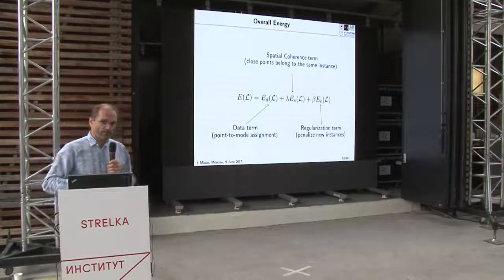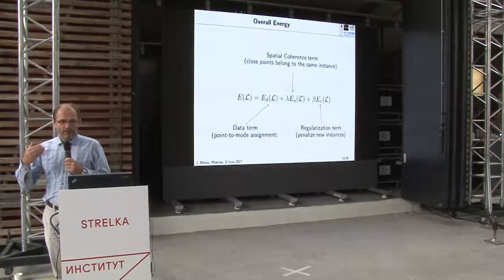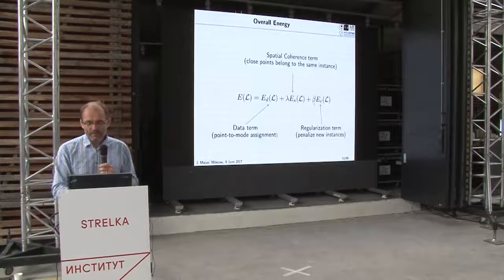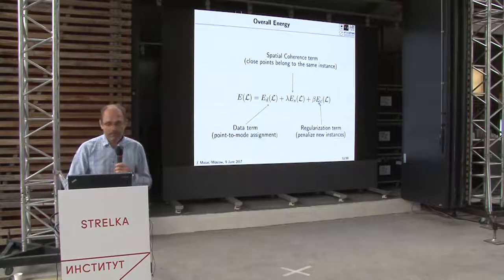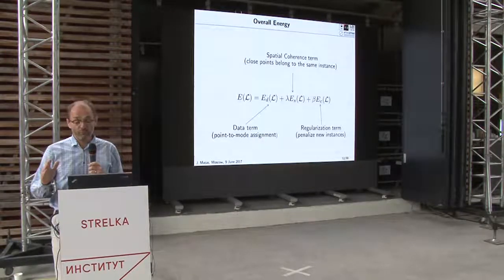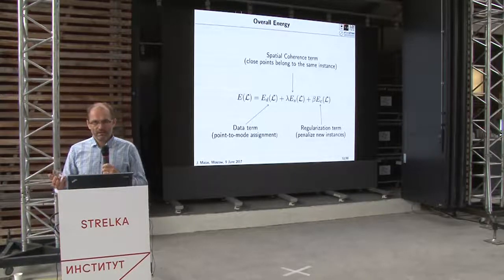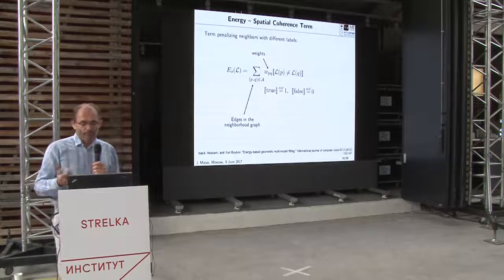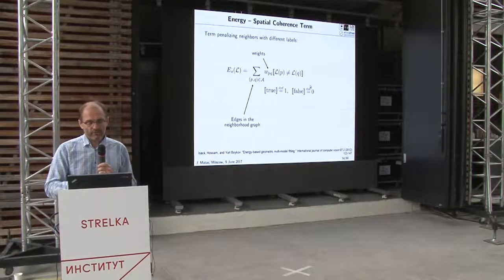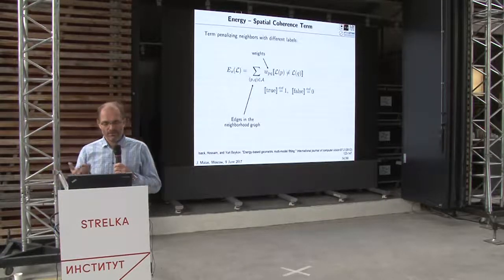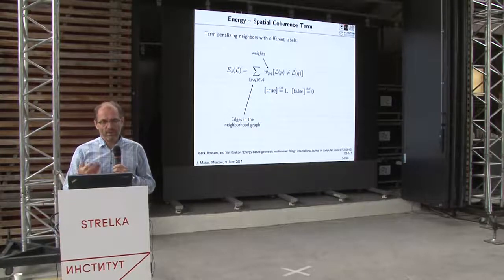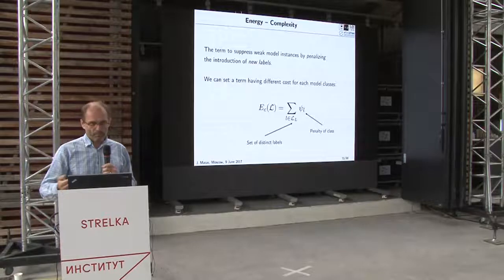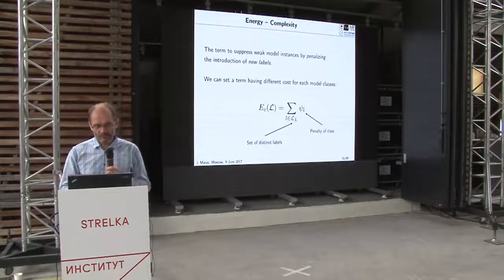Boikov, Isaac, and Hossam proposed that single-class multi-instance fitting is minimization of an energy that is a function of labeling: a term for correctness of point-to-instance assignment, a spatial coherence pairwise term, and a term penalizing too many labels. This is a graph minimization problem with efficient methods available, solved using alpha-expansion — a series of graph cuts on a graph computed from the neighborhood relationship of the points.